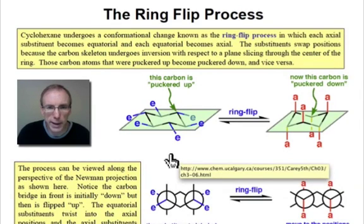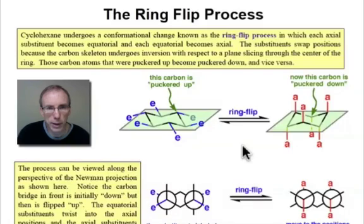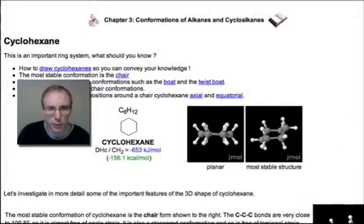The process of ring flipping will take each equatorial substituent and make it an axial substituent. Also, atoms that are puckered up above that average plane become puckered down. Let's take a look at the process of ring flipping in three dimensions.